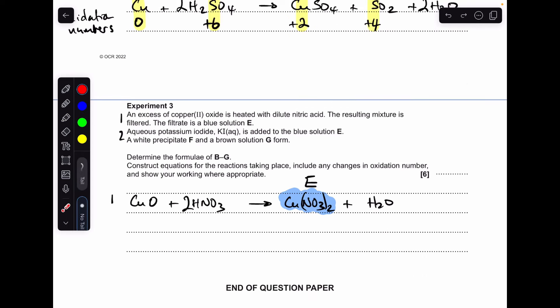And moving on to experiment 3 to finish, so there's two parts to this. Part 1, the excess copper(II) oxide is heated with dilute nitric acid, so basically it's a neutralisation reaction, so acid plus metal oxide gives salt and water. So this blue solution E is copper(II) nitrate. And in terms of oxidation number, there's no change, because copper starts at plus 2, and it's still plus 2 there.